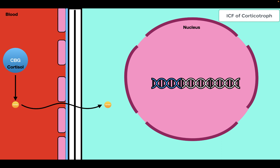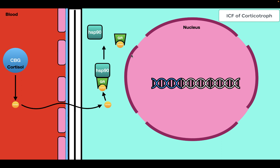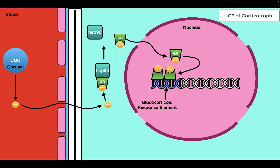When cortisol is in the cytosol, it binds to the glucocorticoid receptor. The glucocorticoid receptor is bound to a chaperone protein such as Hsp90. When cortisol binds to the glucocorticoid receptor, these two proteins dissociate. The glucocorticoid receptor-cortisol complex then moves into the nucleus, where it binds to glucocorticoid response elements on DNA, forms a homodimer, and regulates the expression of different genes.